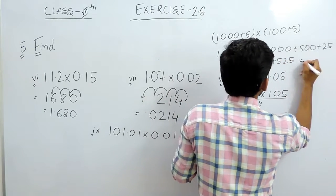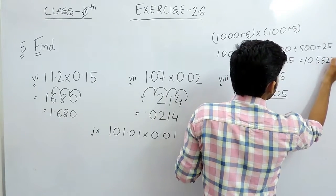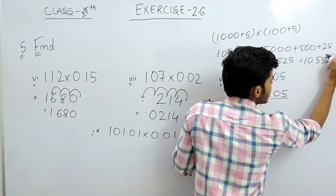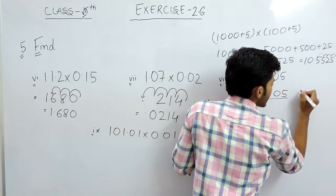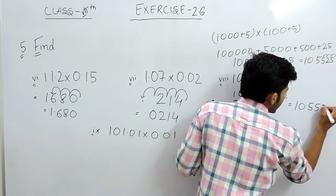And now it will be 105525. There are 4 decimal places, so we will shift this decimal towards the left by 4 places, and the answer will be 10.5525.